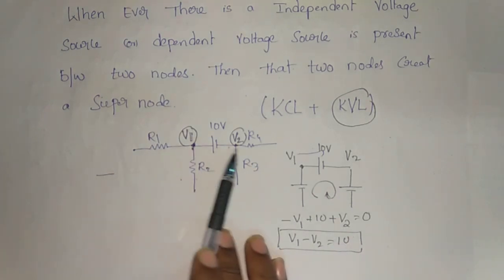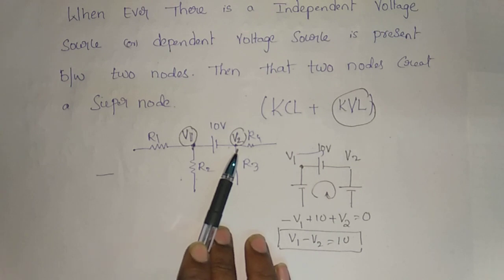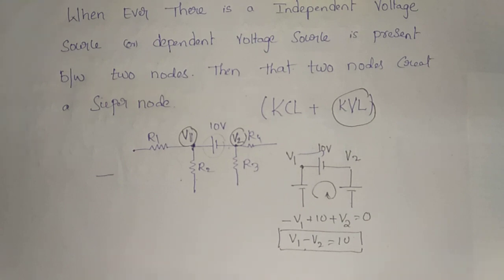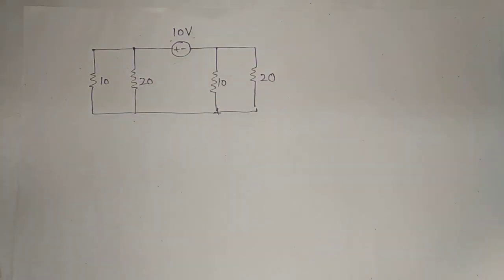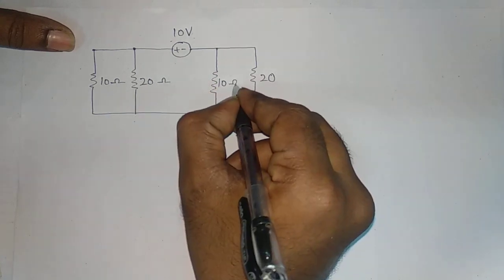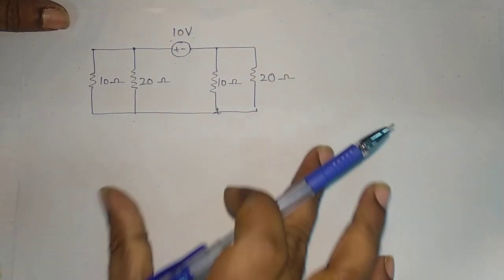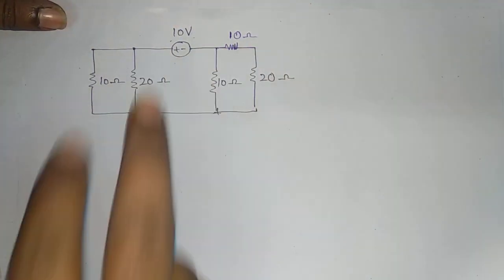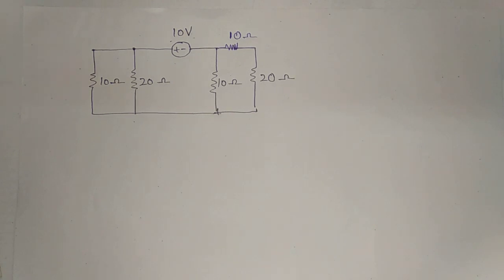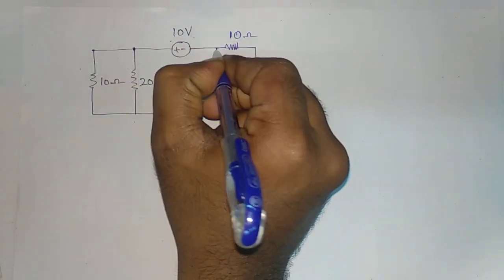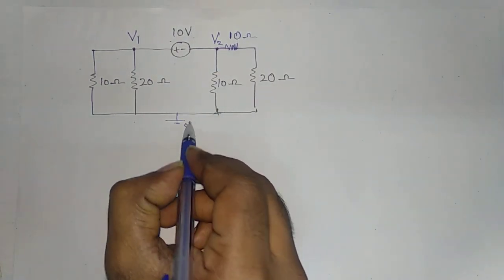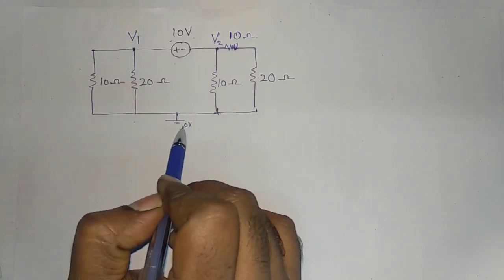And here we can do a normal node. We can apply the nodal equation in the middle — this is a super node. So we change the problem. The problem involves ohms. We can apply node voltages. We can change the nodal. This is V1, this is V2, this is zero potential — this is the reference node.